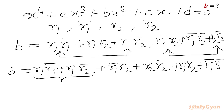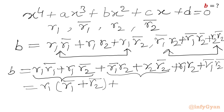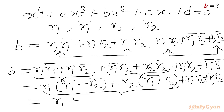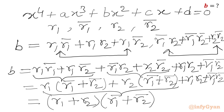Taking r1 common from the first two terms and r2 common from the next two terms, we arrive at our expression for b: b = (r1 + r2)·(r1_bar + r2_bar) + r1·r2 + r1_bar·r2_bar.